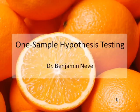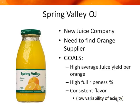In Chapter 9, we're going to be talking about one-sample hypothesis testing. To start out with, we're going to do a little bit of a review and a little bit of a transition. Suppose there's a company, Spring Valley OJ. This is actually a company from Australia. They want to find a new orange supplier, as they make orange juice.